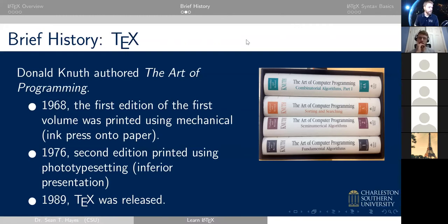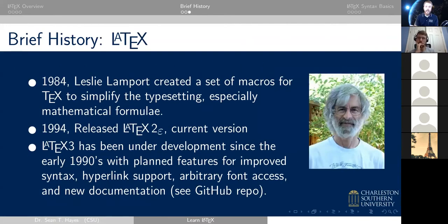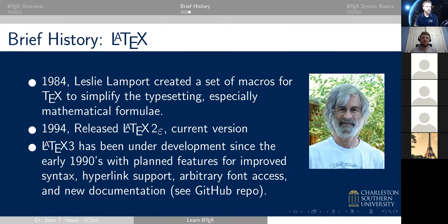In 1984, Leslie Lamport added a bunch of macros to TeX and called it LaTeX. This very cleanly separated content from formatting and made it much simpler, and also made it much easier to write mathematical formulas. TeX had the ability to do it in precise ways, but required a lot of background knowledge. Right now we're on LaTeX 2e, released in 1994. There's been continuous development since, but no major features have changed.